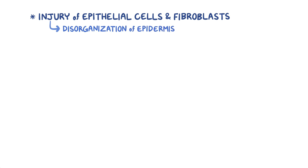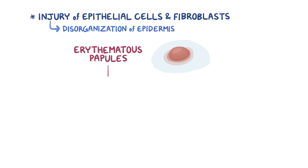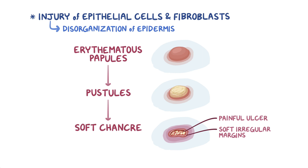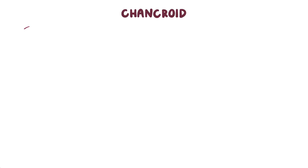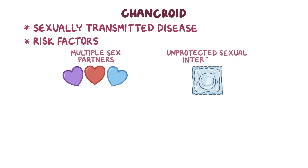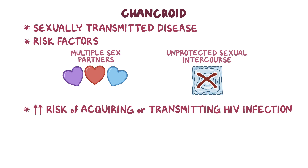All of these processes lead to injury of epithelial cells and fibroblasts, causing disorganization of the epidermis and formation of erythematous papules — red elevations of the skin. Eventually the papules collect pus and become pustules, which rupture to leave behind an extremely painful ulcer with soft, irregular margins called a soft chancre. Haemophilus ducreyi causes chancroid, a sexually transmitted disease. Risk factors include multiple sex partners or unprotected sexual intercourse, and people with chancroid have a higher risk of acquiring or transmitting HIV.